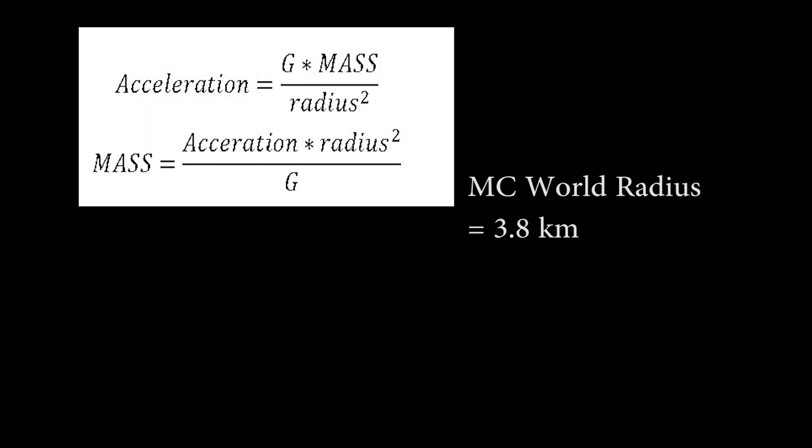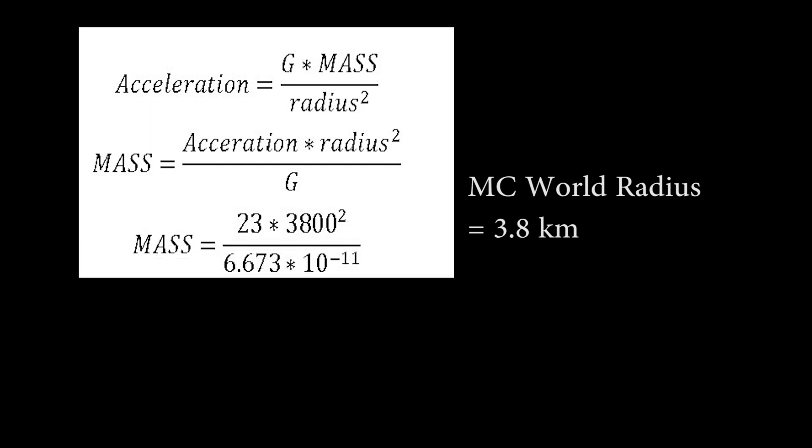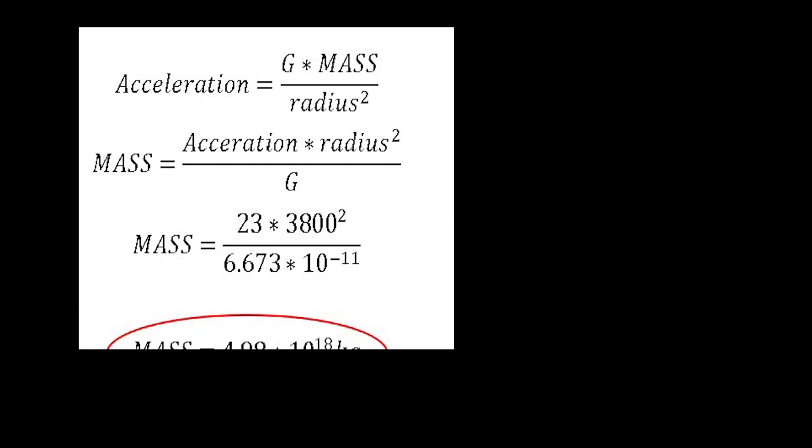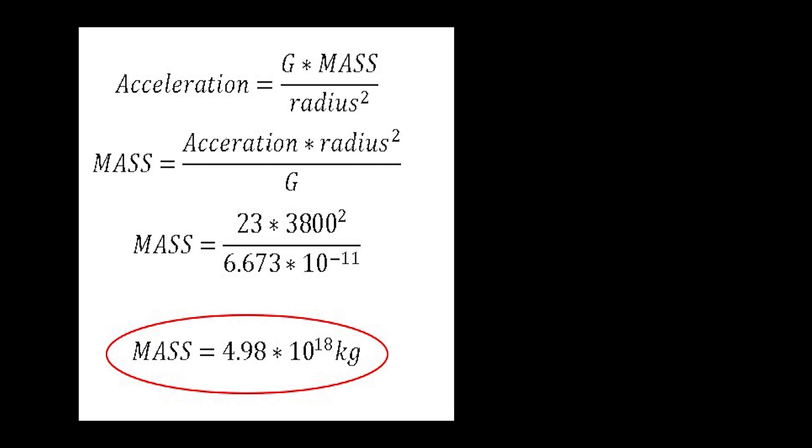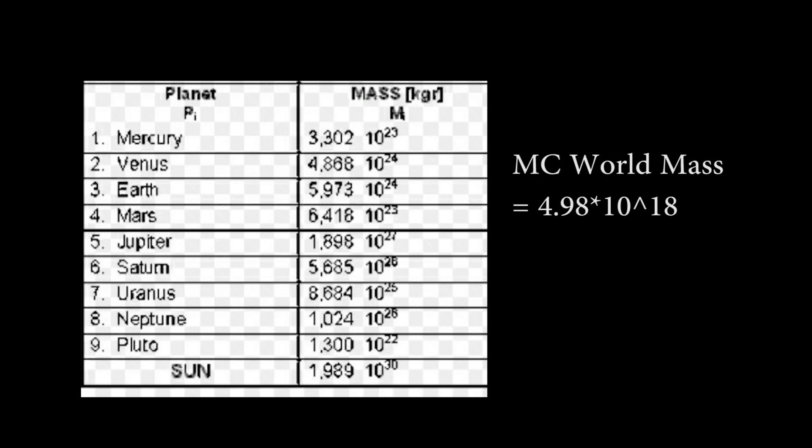If we plug this radius into our original gravity equation and solve for the big M, the mass ends up being 4.98 times 10 to the 18 kilograms, or about 5 quintillion kilograms. Compared to other planets in our solar system, it's actually quite light, but still pretty heavy for such a small radius.